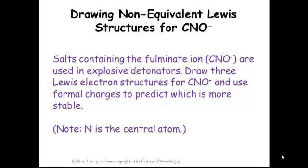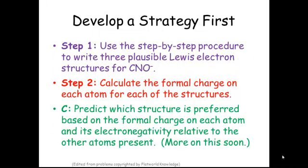Nitrogen is the central atom on this molecule. So if you want to pause and try it first, feel free to do that. So we need to develop a strategy for doing this. We're going to use the step-by-step procedure that we already learned to write three reasonable Lewis structures for the fulminate ion.